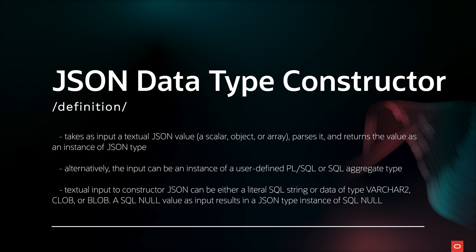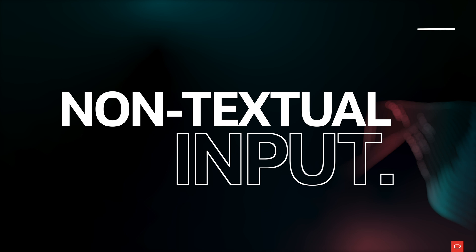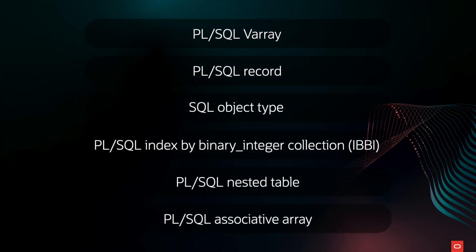The JSON constructor has been enhanced to accept an instance of a corresponding PL/SQL Aggregate type, returning a JSON object or array type populated with the Aggregate type data. The JSON value operator has also been enhanced so that its returning clause can accept a type name that defines the type of the instance that the operator is to return. JSON constructor support for Aggregate data types streamlines data interchange between PL/SQL applications and languages that support JSON.